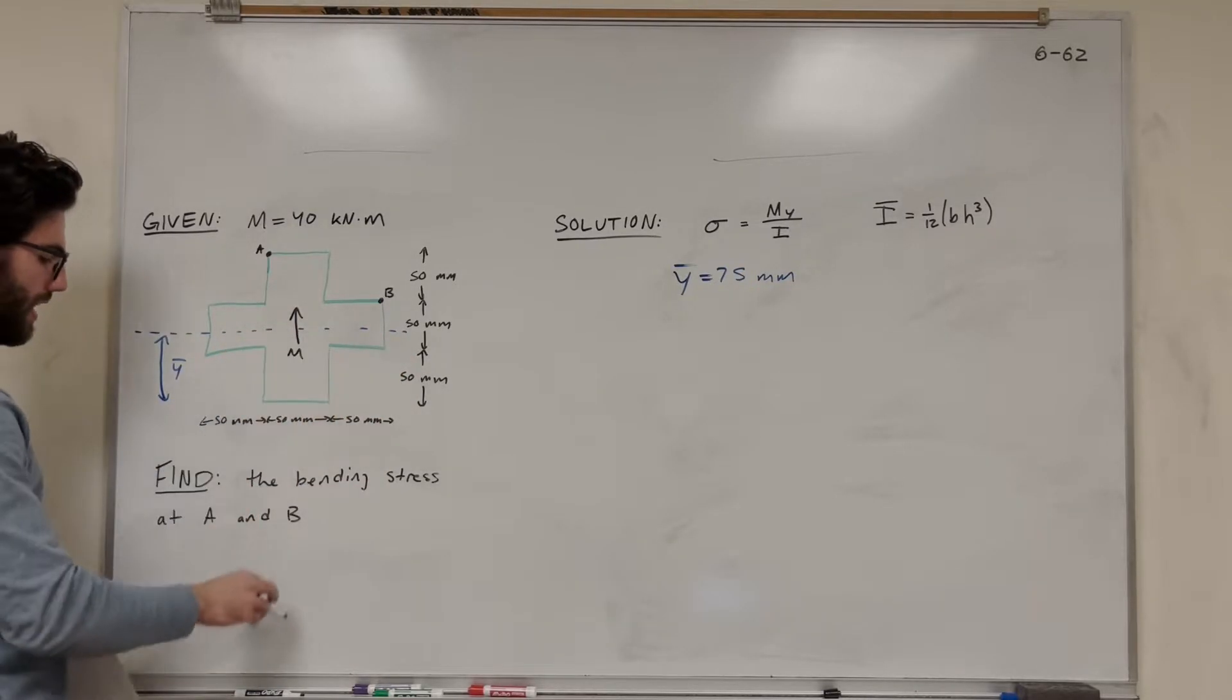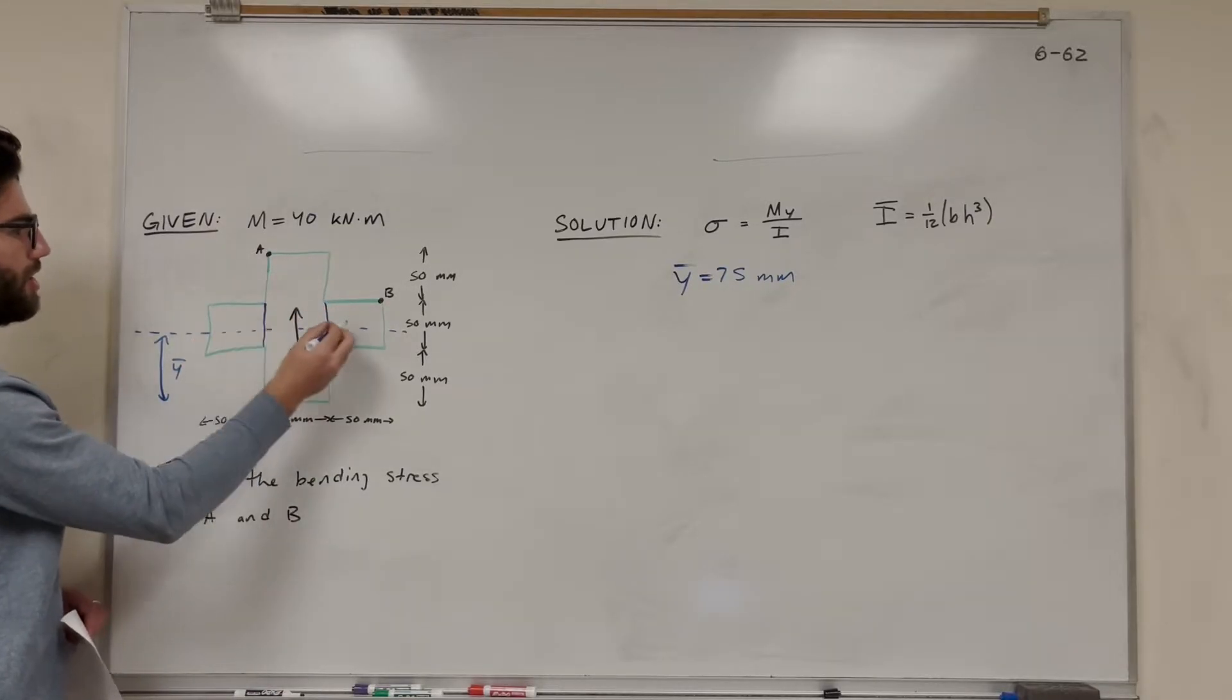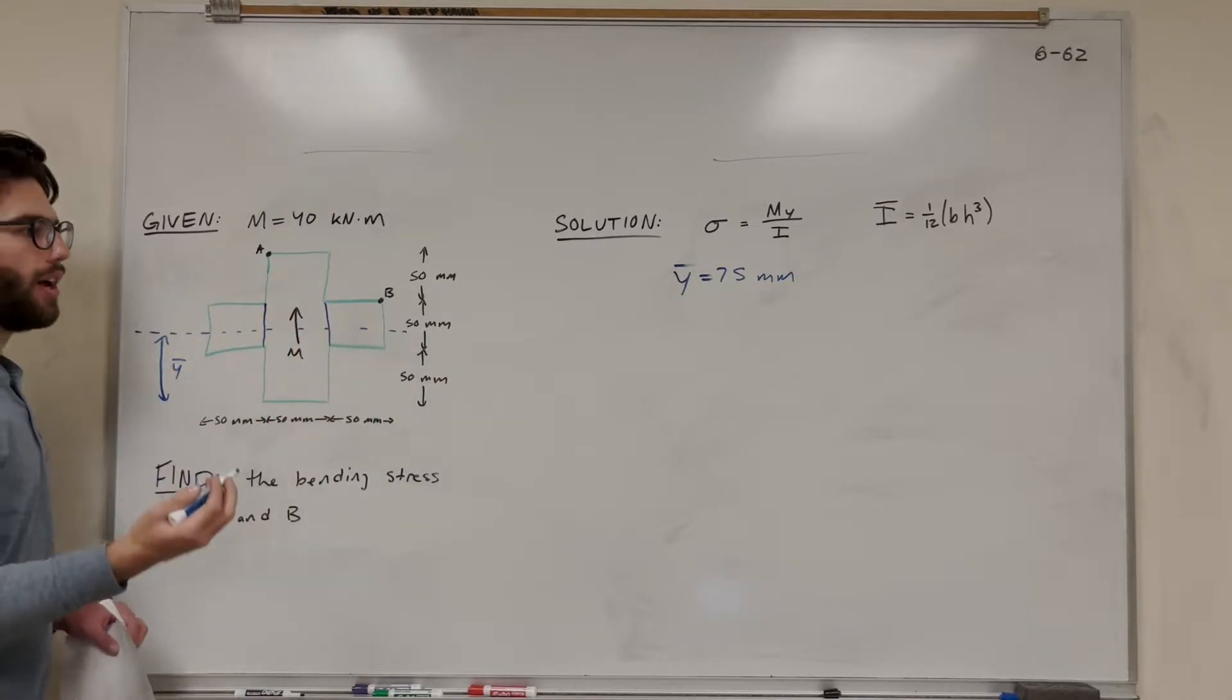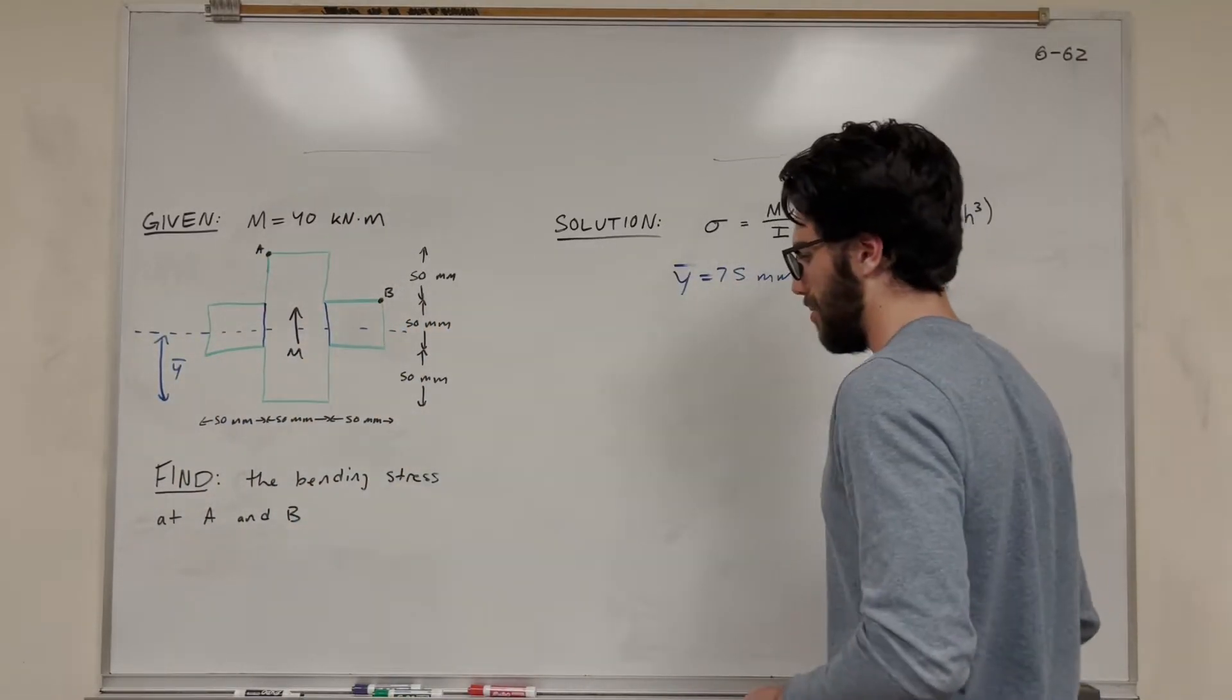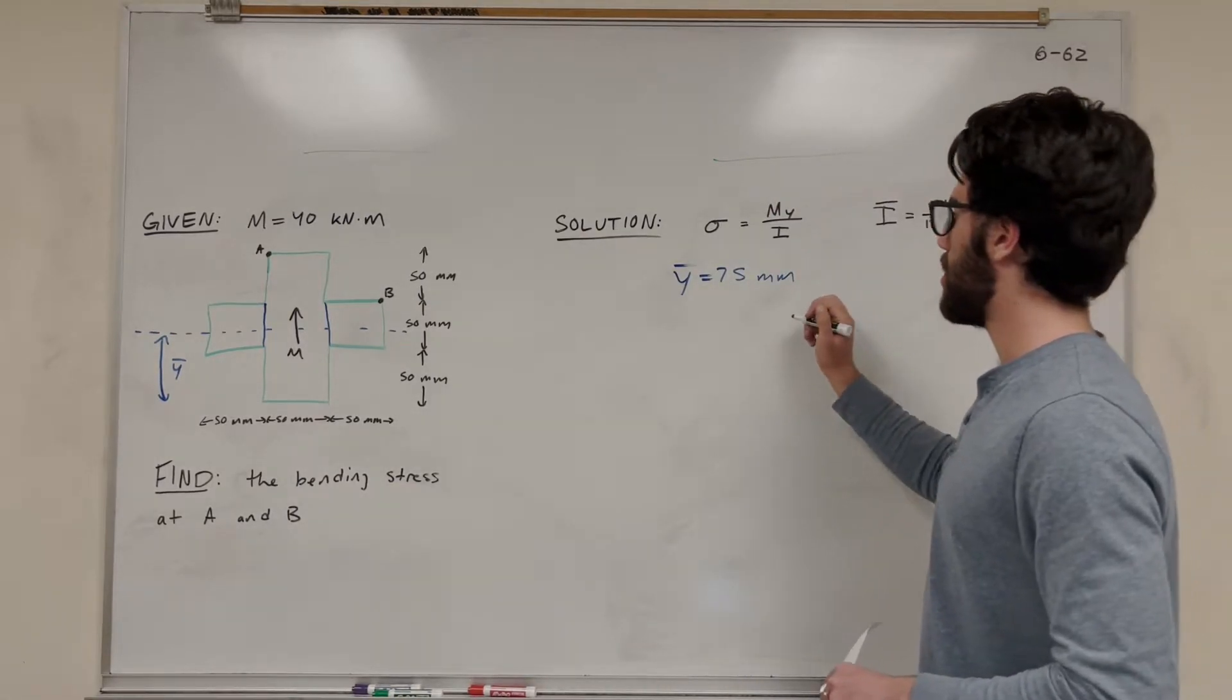Now we can choose the right shapes. We can choose this big rectangle, and we can choose these two squares now to be the shapes that we use. And they're both lying on the centroid. So we don't have to do the whole distance from Y thing. So let's go ahead and find the moment of inertia now.